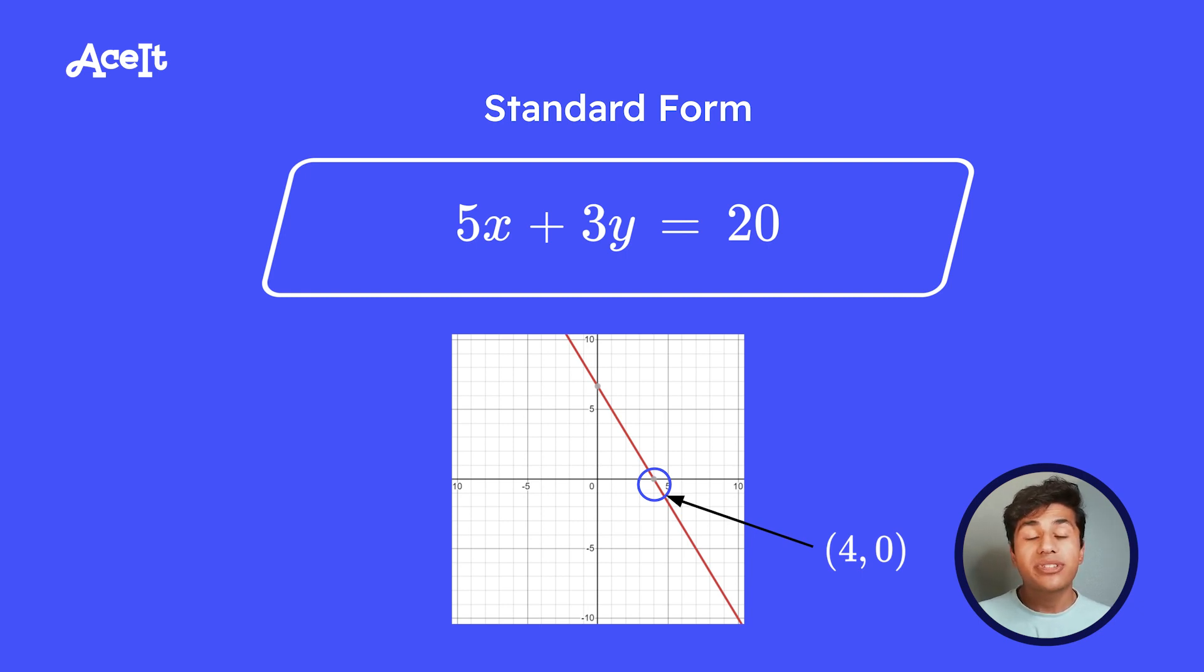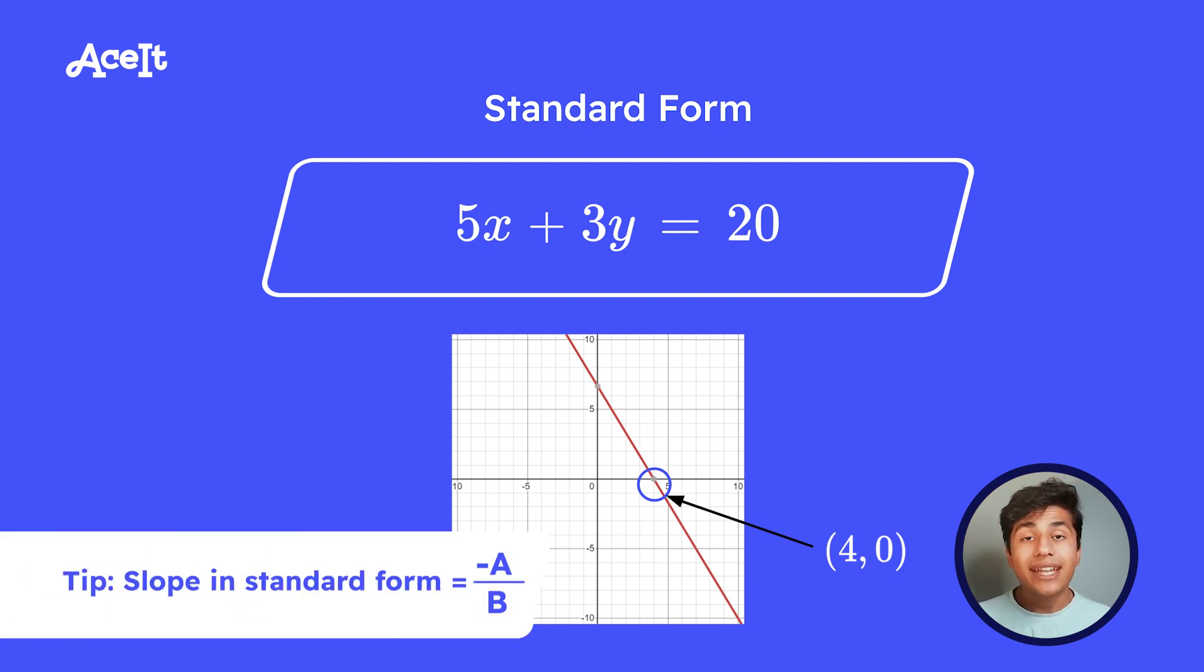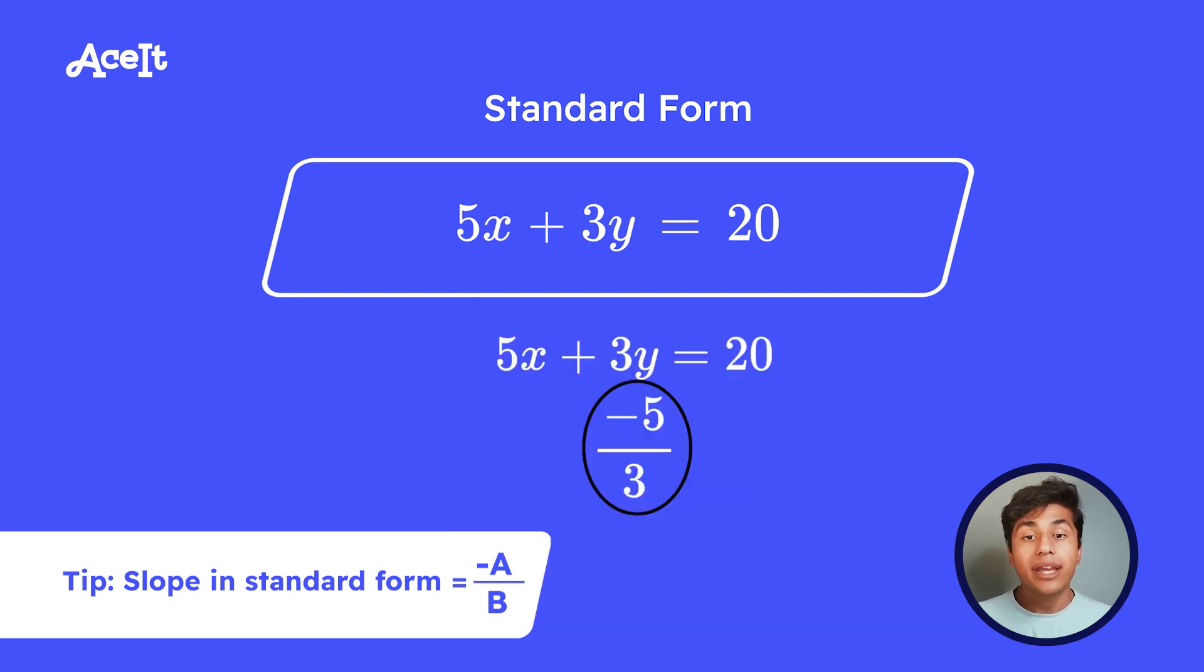You can also find the slope of the equation by using standard form. So you do this by taking the opposite sign of coefficient a, and then taking that over b. So in our previous example, we had 5x plus 3y equals 20. So with this in mind, our slope would be negative 5 over 3.